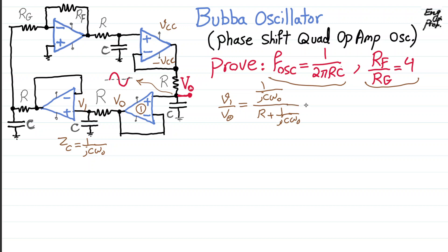Now, if we clean this up, what we get is V1 over V_out is equal to 1 over 1 plus jRCω naught. So let's keep this as equation number one.